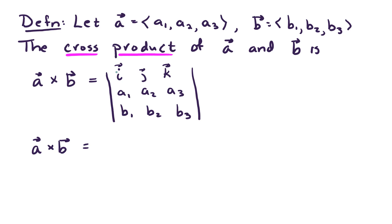Again, we'll expand on our top row. So what we have is we have I times the determinant of the little 2 by 2 matrix that's left over after removing row 1 and column 1. So that works out to be A2, B3 minus B2, A3, and that's times unit vector I.